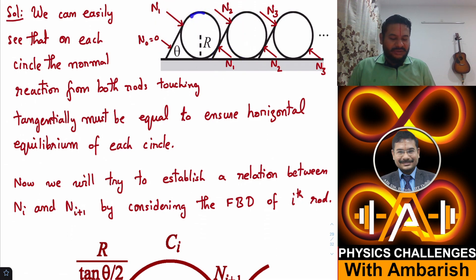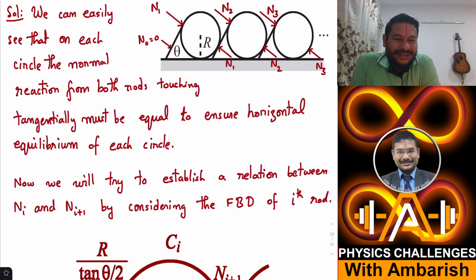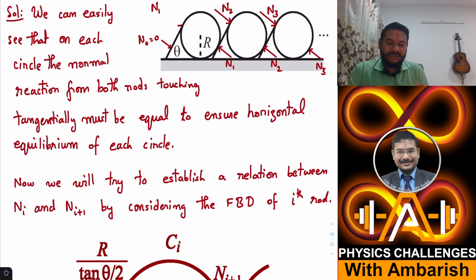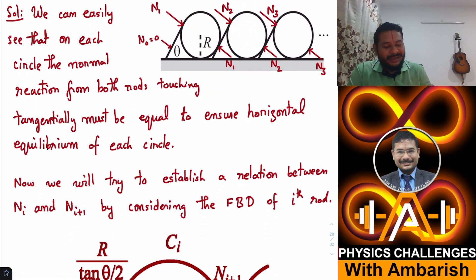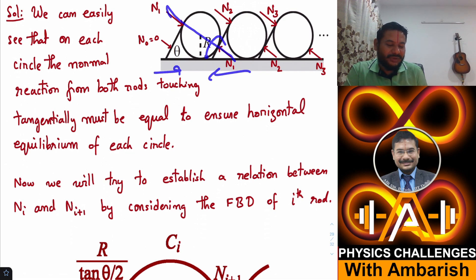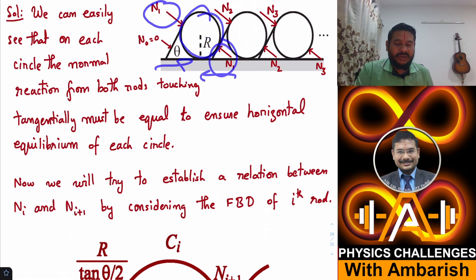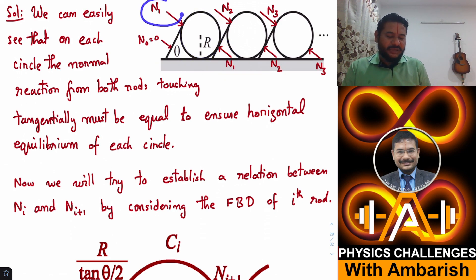Why should the two normal reactions on each circle be equal? The only horizontal forces on every circle are the horizontal components of these normal reactions, so those components must balance. Since both tangents are equally inclined to the horizontal, and the directions are anti-parallel, if the horizontal components are equal then the magnitudes must be equal. Therefore I use the same symbol N1 for both sides of the first circle.